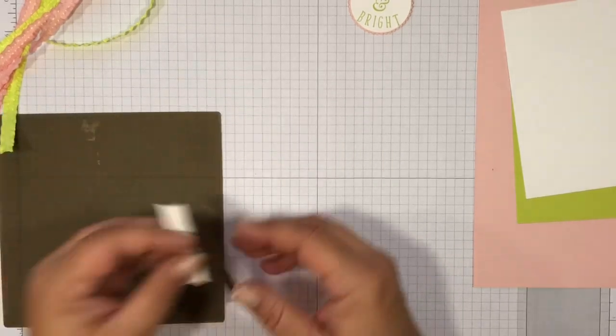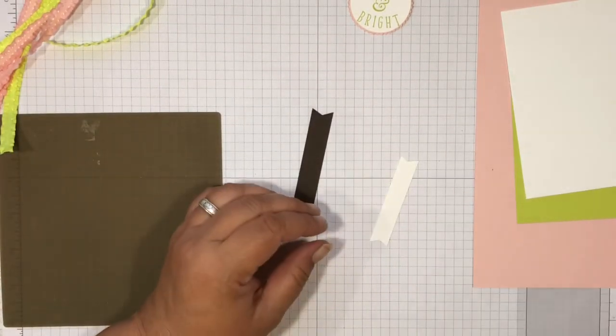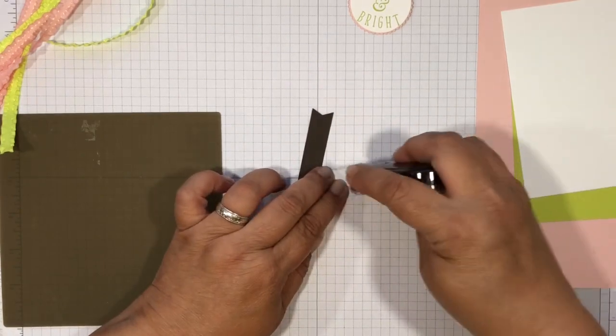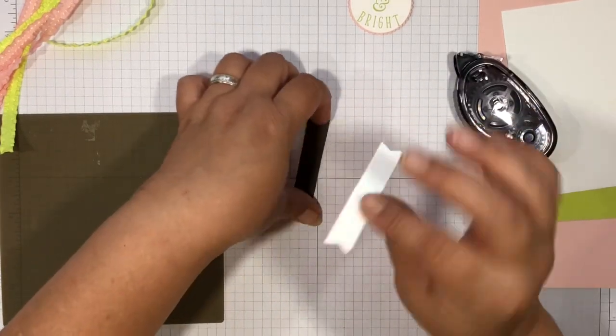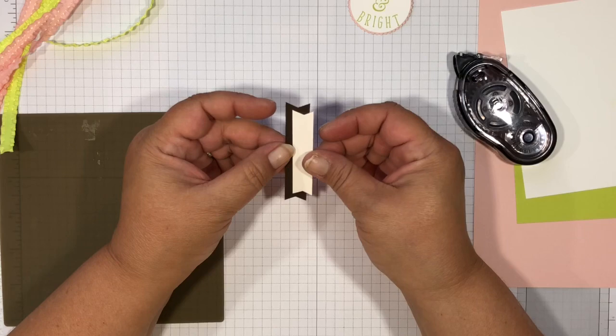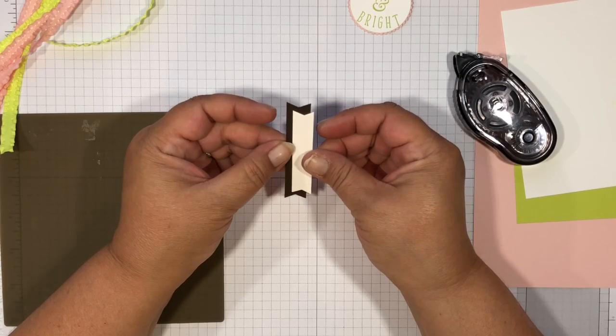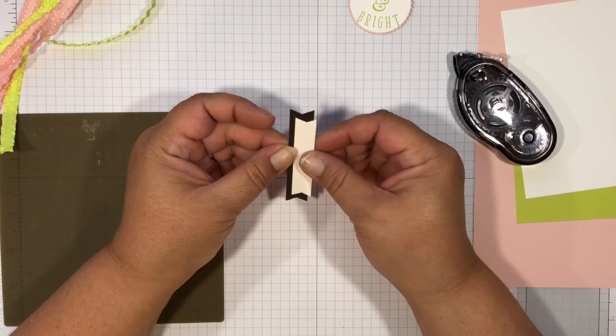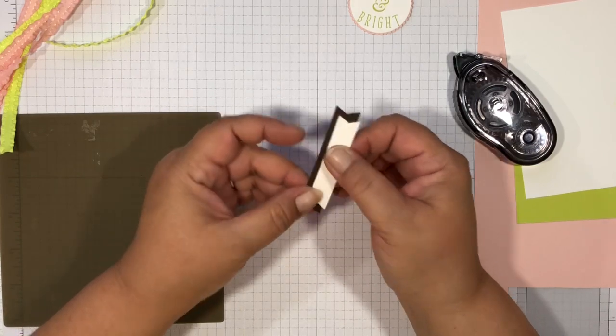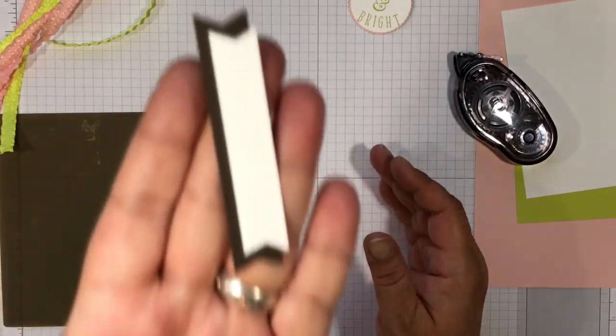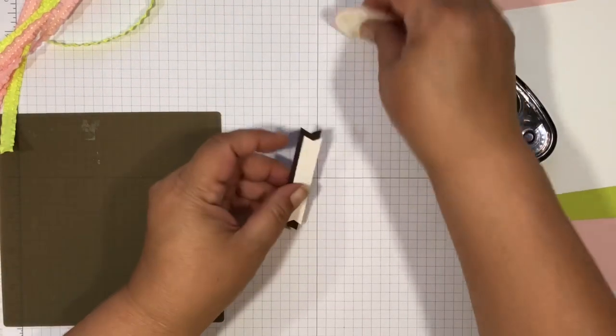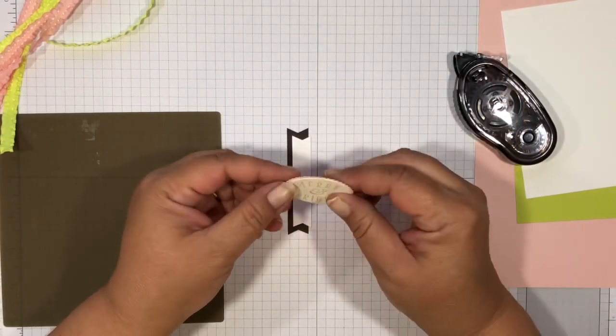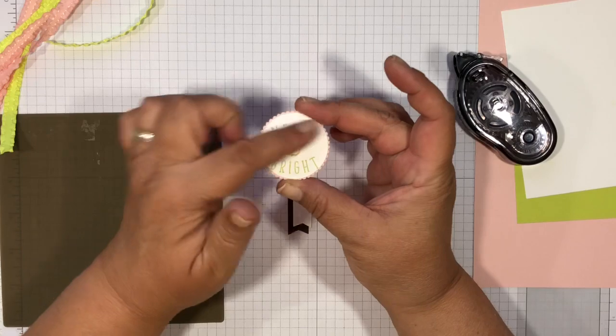I am going to need this silicone mat. Now we're going to take some snail, I'm just going to put a little bit right here in the middle and we're going to attach it to the early espresso like a shadow. It's offset just a little bit kind of like this.